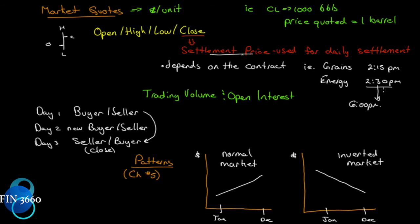Trading volume and open interest can be a little tricky. Here's a simple example: on day one, a buyer and seller enter into one contract — volume is one, and open interest is one. The next day, a new buyer and seller come along — trading volume for the day is one, but open interest is now two because there are two contracts in existence.